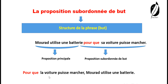On peut dire aussi : « Pour que la voiture puisse marcher, Mourad utilise une batterie. » Comparer cette phrase et celle-ci. La différence, c'est qu'on a commencé par le moyen « pour que ». On a commencé par la proposition subordonnée de but. « Pour que la voiture puisse marcher, Mourad utilise une batterie. » Cette phrase est comme la première au niveau du sens. Les deux phrases sont correctes, mais on a inversé les places de la proposition principale et de la proposition subordonnée.